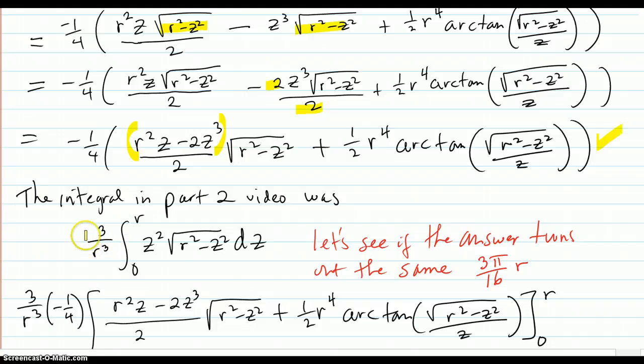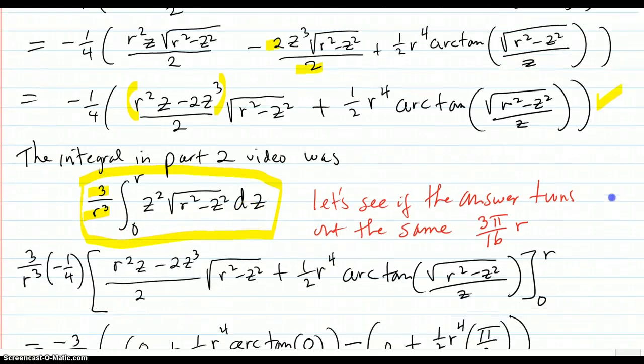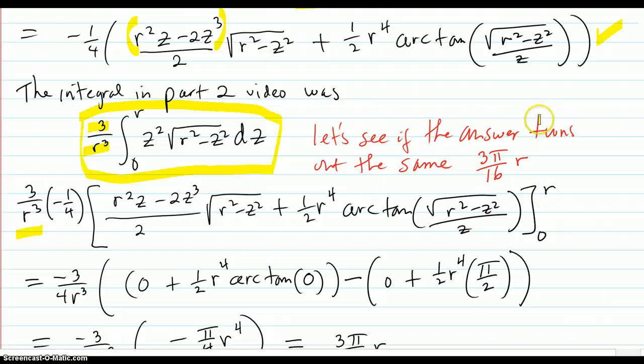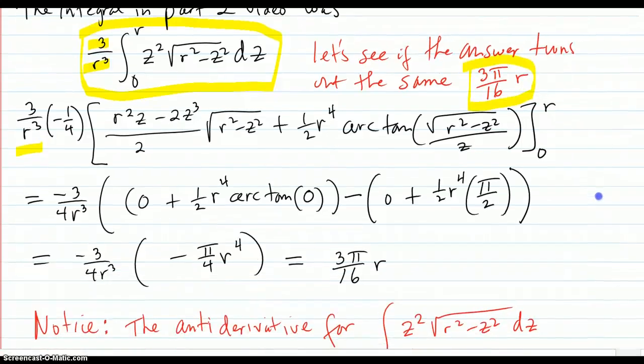Okay. Then I remembered from part two video that this integral is what we really wanted for the center of mass of the 3D object. And it had this 3 over r cubed out there. So we now have our answer to the integral part. It's negative one fourth out there. Where you hit it with this 3 over r cubed. And then you evaluate our expression 0 to r. And you better get the same answer as you did in the previous video. Which was 3 pi over 16 times r was where the center of mass of z value was.